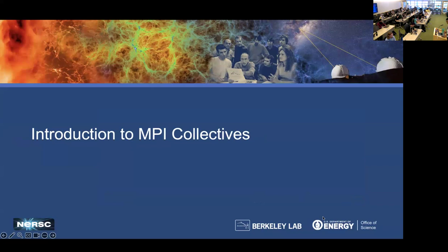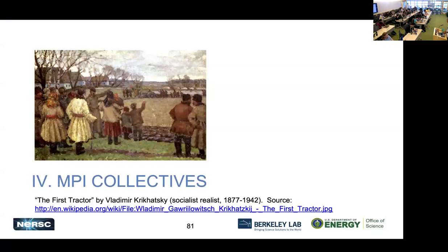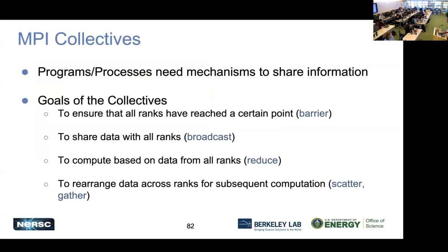We will continue on with the MPI fundamentals, talking about MPI collectives. We've talked a little bit about communication between point-to-point processes, and MPI has a categorical group called collective communications. With collective communications, we basically want to enable mechanisms for processes to be able to communicate whatever information they need to an appropriate group. All of our processes or ranks are going to reach a certain point, and we do that through what we call barrier operations.